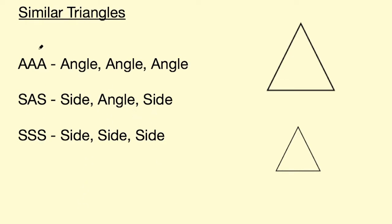So they're the three tests. You either need to know two of the angles of each triangle, two of the sides and the angle in between those sides, or all three sides of each triangle to prove that they're similar.